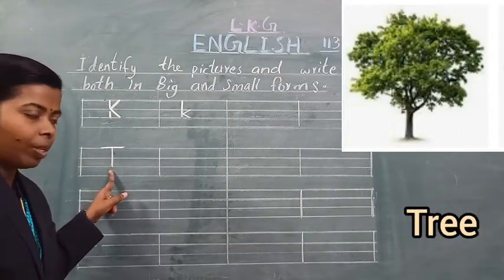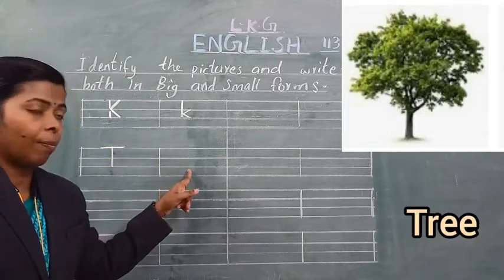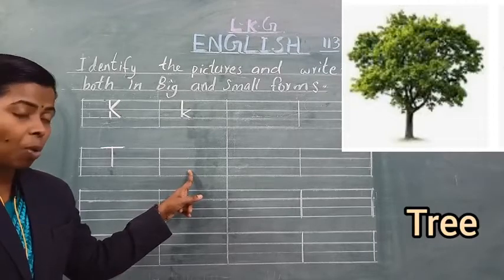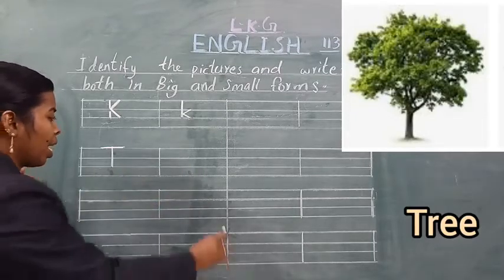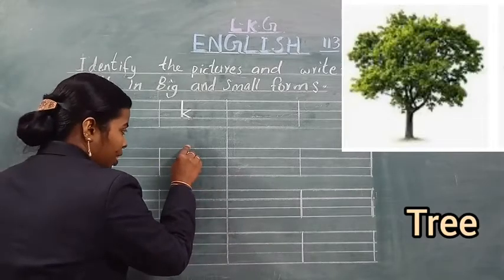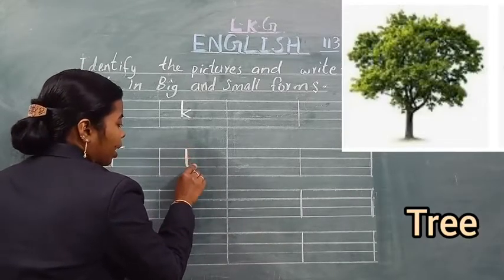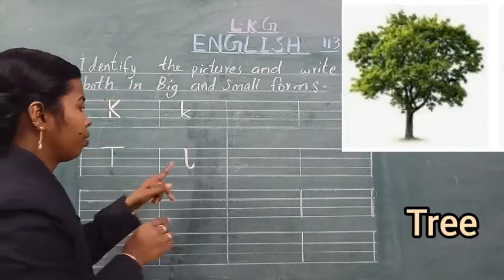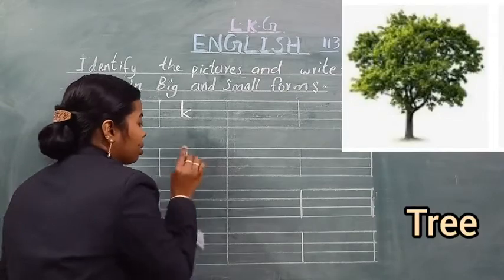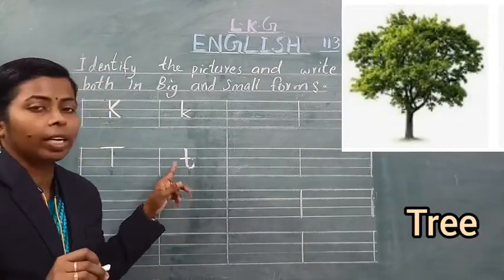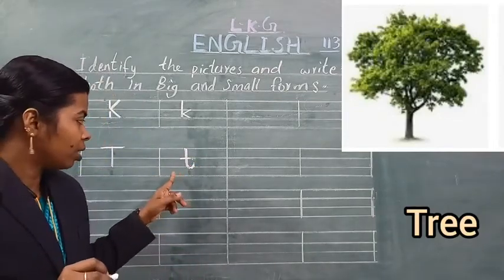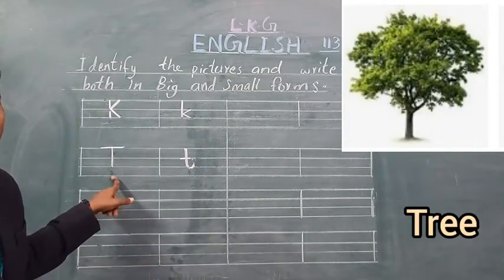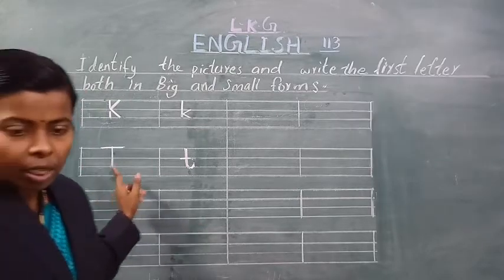Capital letter T: sleeping line and standing line. This is capital letter T. Small letter T kaise likhenge? Start from first line to third line, standing line with a curve, then a sleeping line in the middle. This is small letter T. Samajh me aaya kya? Yes.